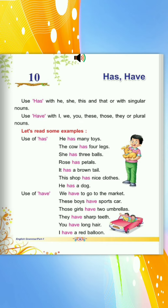It has a brown tail. This shop has nine clothes. He has a dog.